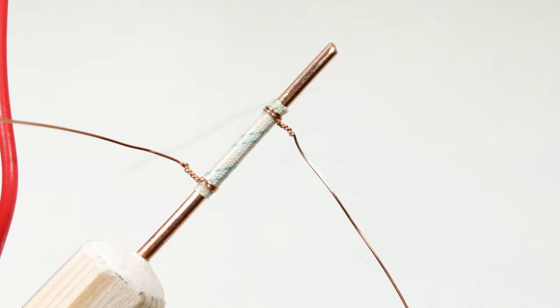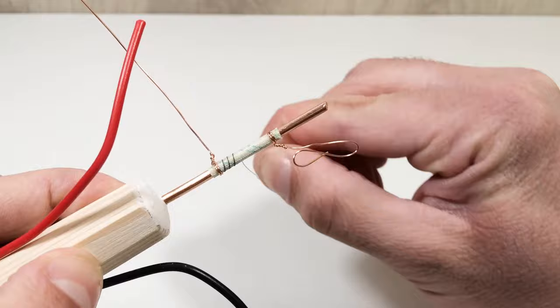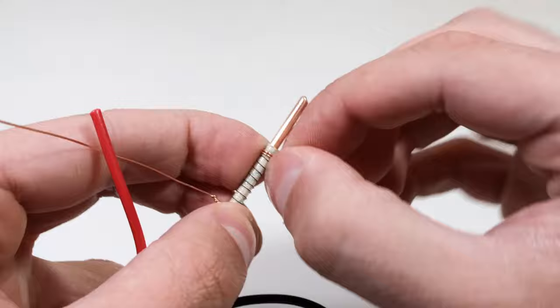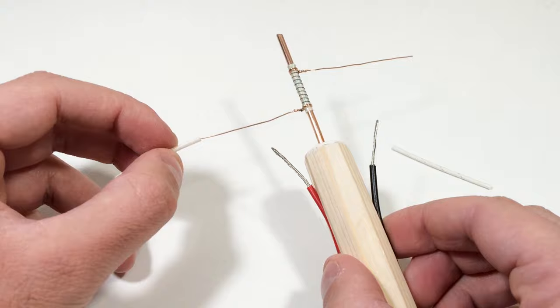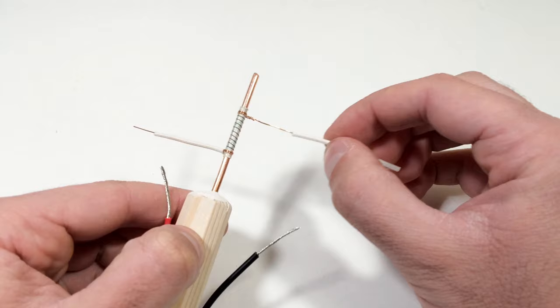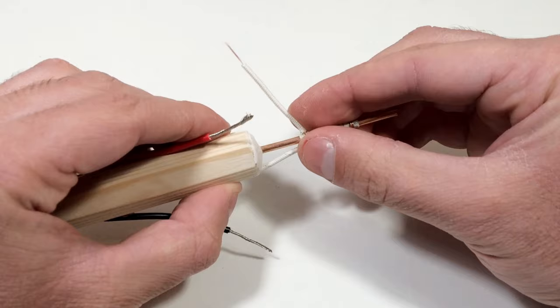Then we wind a nichrome wire on a soldering iron tip. Then we put heat resistant insulation on copper wires. Next we connect all the wires.